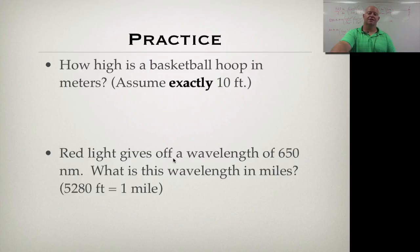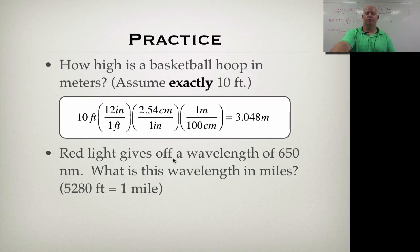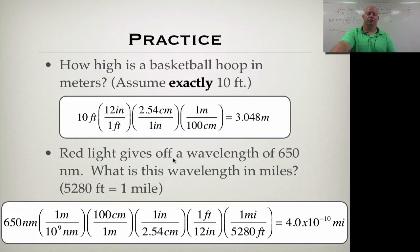So the first one, it says exactly. So since it's exactly 10 feet, we're not going to worry about significant figures. It's not measured here. So 3.048 meters. Because if you want to put a basketball hoop up that matches 10 feet and you don't have a measuring tool that's 10 feet, you don't want to round this off. You want it to be exact. And the bottom one here, we're dealing with red light with the wavelength. So go ahead and pause the video again if you want to work this one out. And then we'll see the answer here in a second. So there you go. Working this one out, we get 4.0 times 10 to the negative 10th miles in terms of our length for that one.